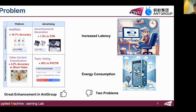Large models have revolutionized the way we conduct business, delivering significant improvements. For instance, we've achieved an 18.7% increase within our advertisement auditing. Despite these advancements, two major problems persist: the high latency of large models and the energy consumption required for deployment. These two problems necessitate a movement toward model compression.